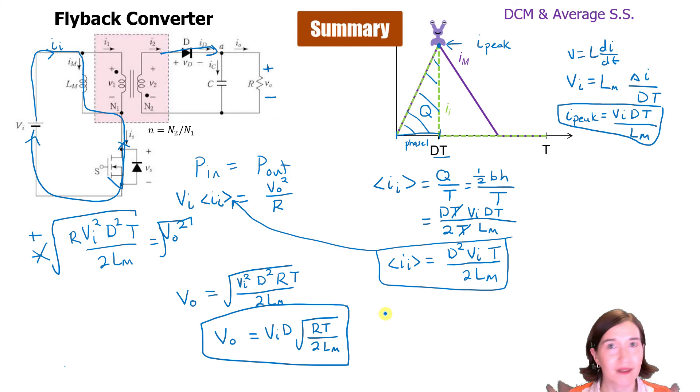So to summarize, this is the equation you can use for a flyback converter. It is based on the duty ratio and input voltage, which is the same as in CCM, but it's not the same as CCM. We also need to know the resistor, the time period, and the magnetizing inductance. So those three values will also affect our output voltage when it's operating in discontinuous conduction mode.